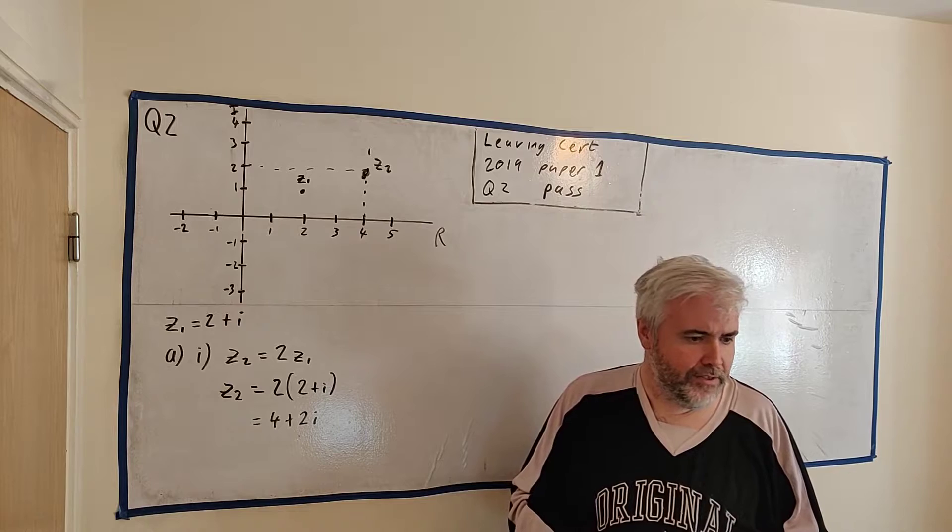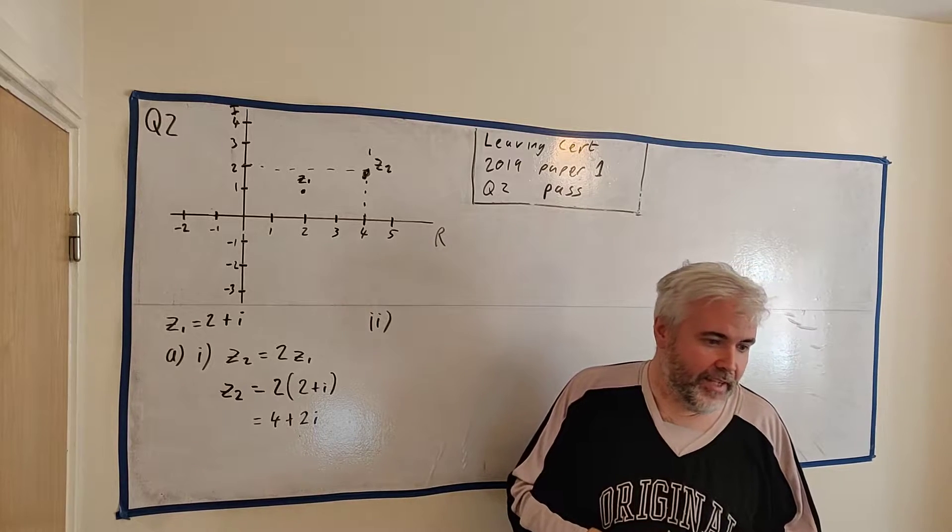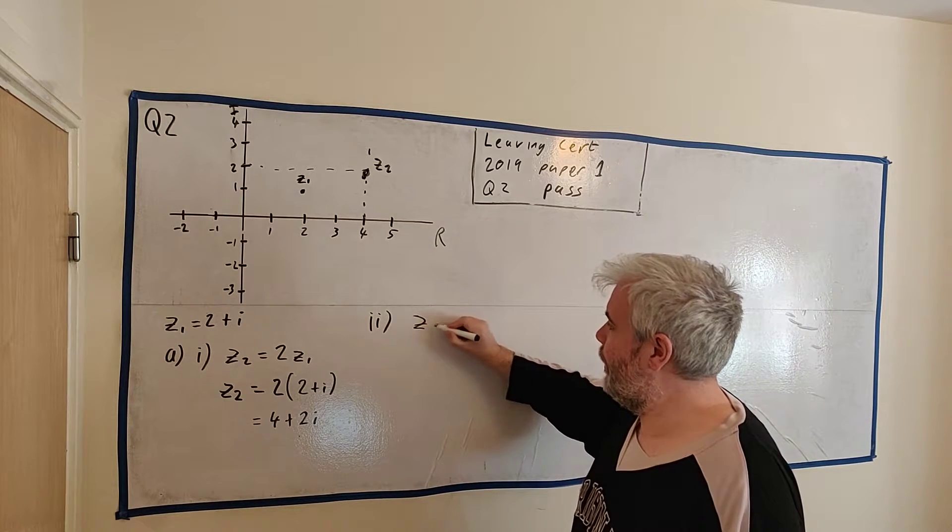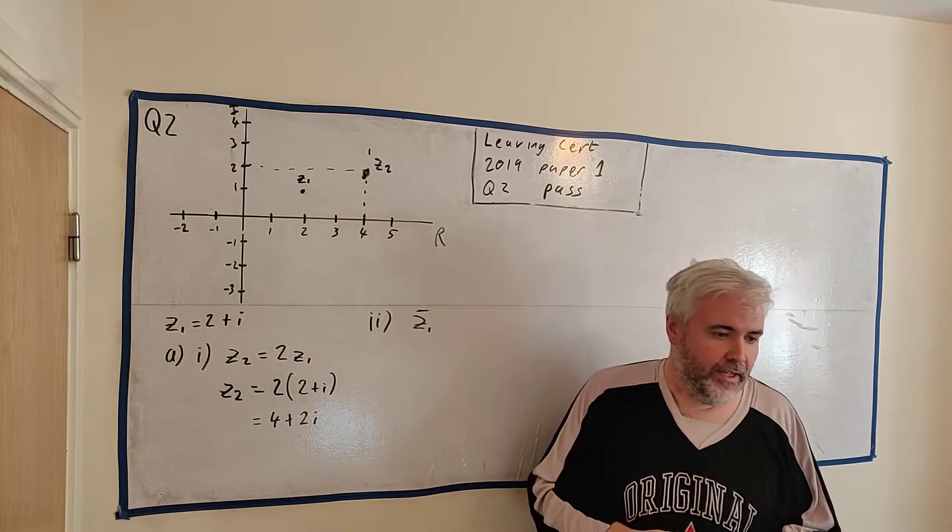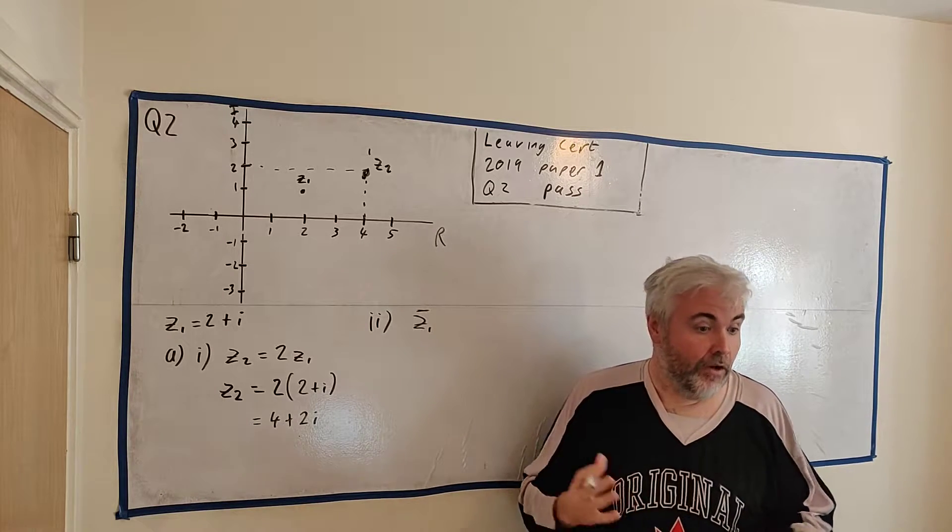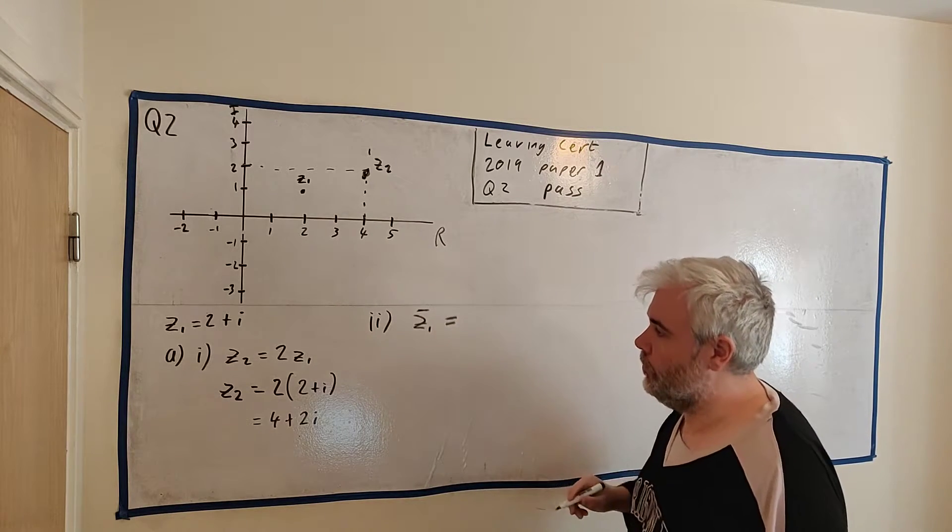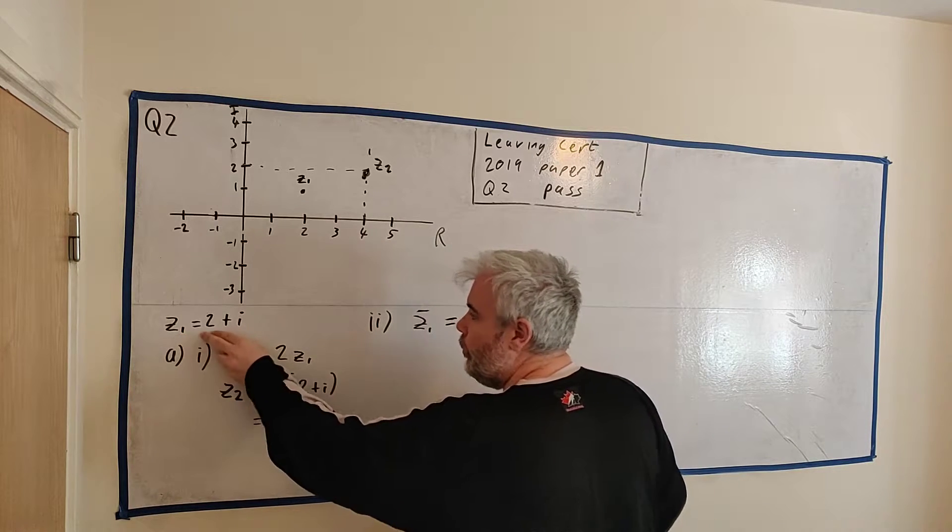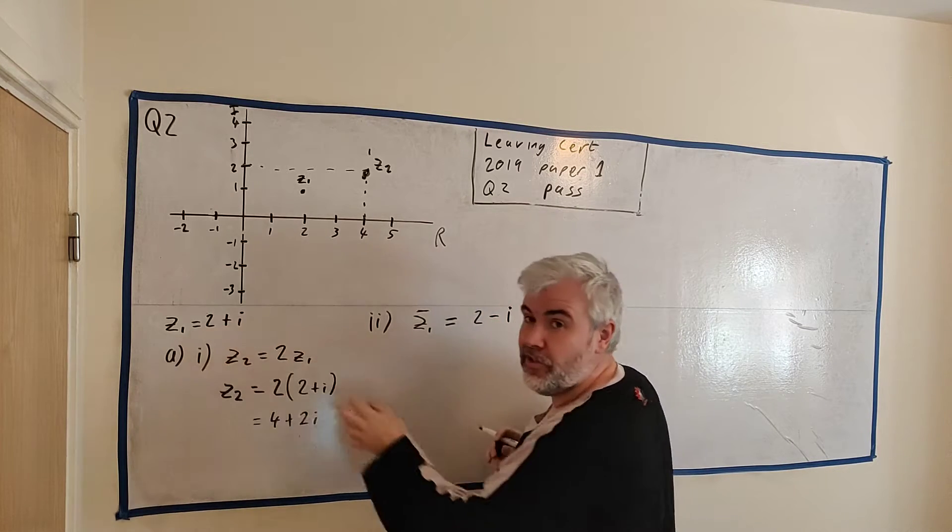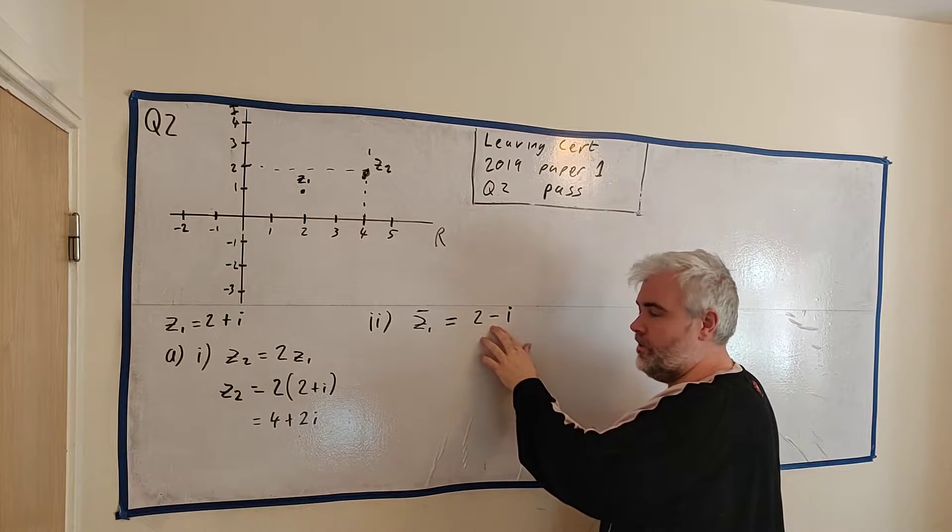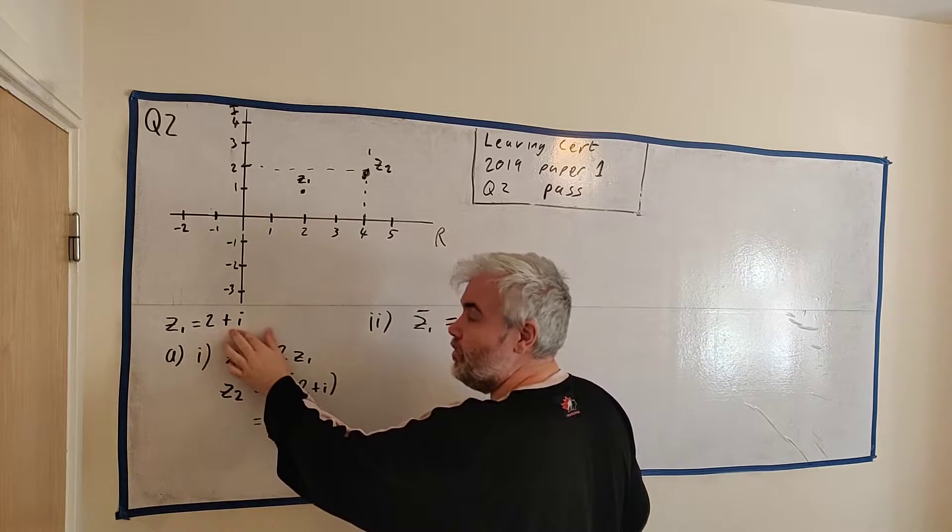All right, so that's part 1. Let's do part 2—there's no work to do, you just need to know the answer. They tell us that Z1 with a little bar on top—a little line on top of it—is the complex conjugate. The complex conjugate of Z1, write it down and plot it. The complex conjugate of Z1 is 2 minus i. It is—we change the sign of the imaginary part, not the middle sign, the sign that's in front of the imaginary part. In this case the imaginary part is 1i, we change the sign in front of that.